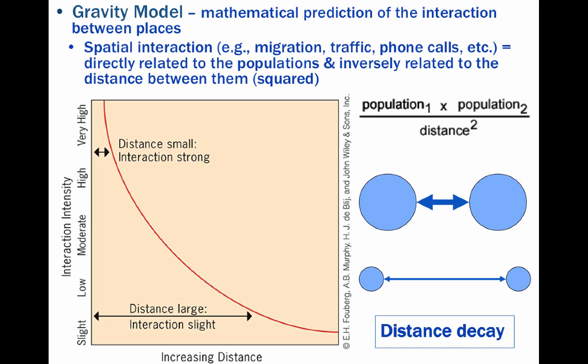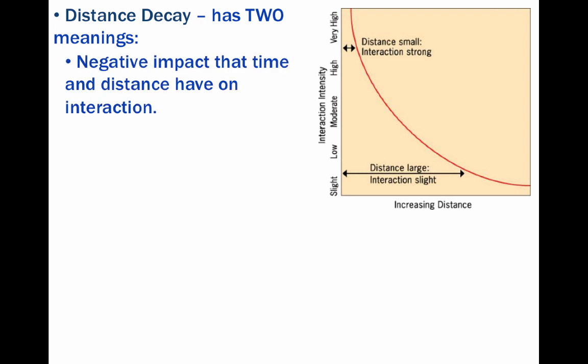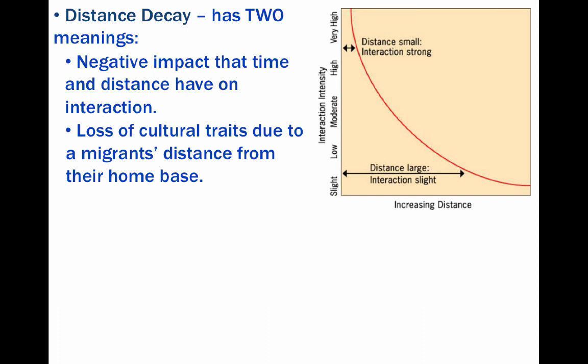This is the essence of distance decay, which has two distinct yet related meanings. The first involves the negative impact that time and distance have on interaction, which is what the gravity model is based on. The other meaning deals with the loss of cultural traits due to a migrant's distance from their home base. So if someone moves a great distance, they are more likely to be around people less like themselves, and since our brains are programmed to adapt to our surroundings, that person would tend to adopt more of the cultural traits of those around them.